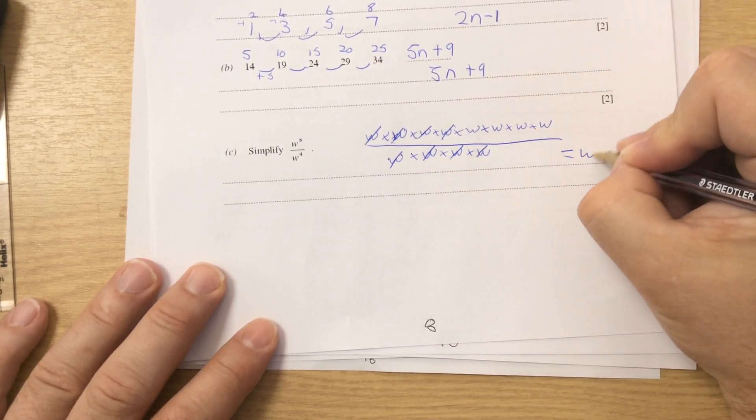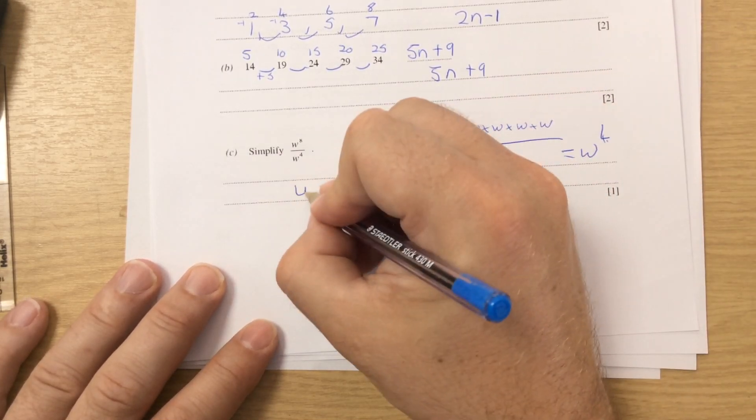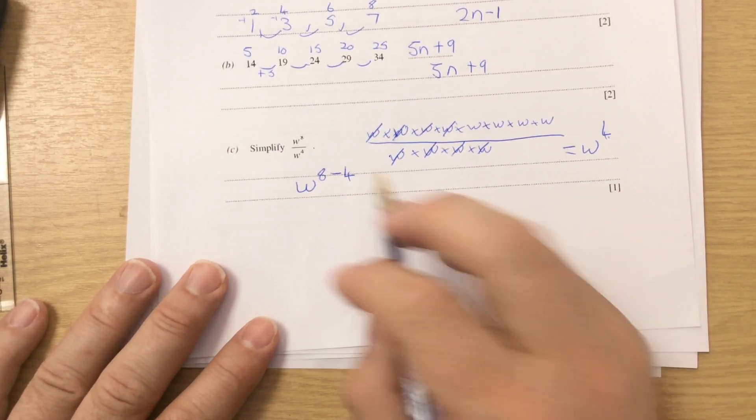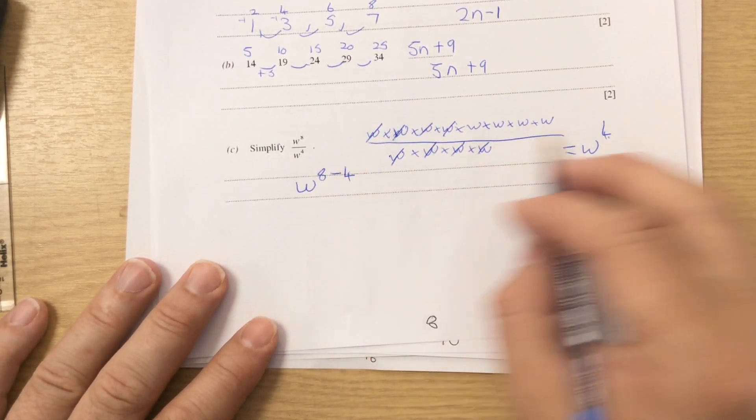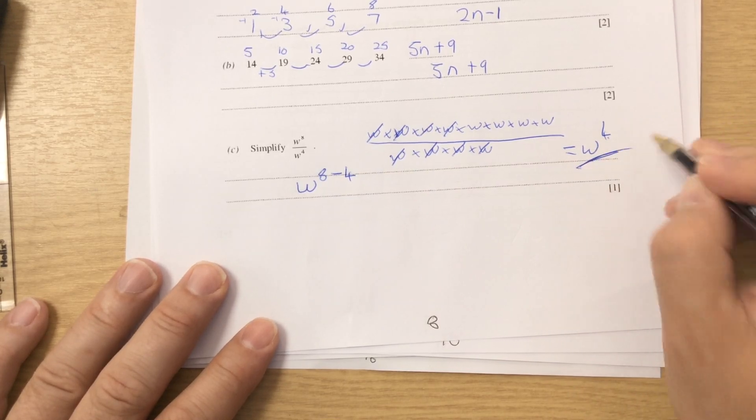And I'm left with 4, so it's W to the 4. But as I said earlier, a quick way, when you're dividing the same base, you just take away. So 8 take away 4 gives me 4.